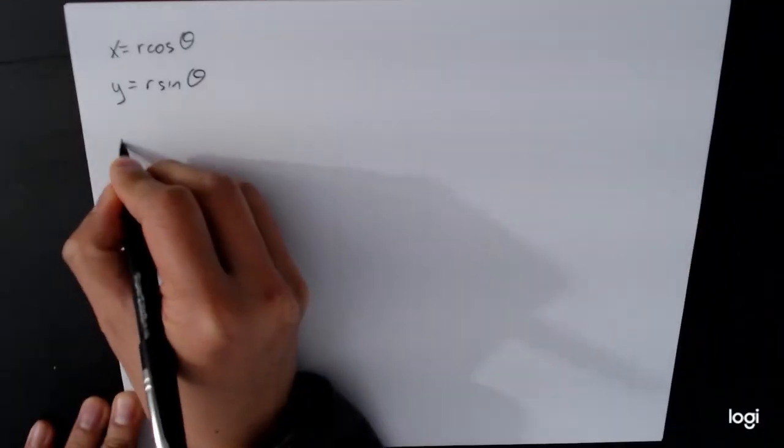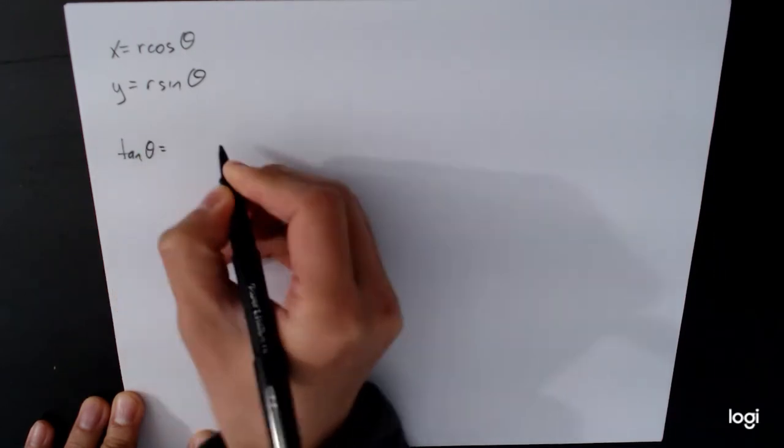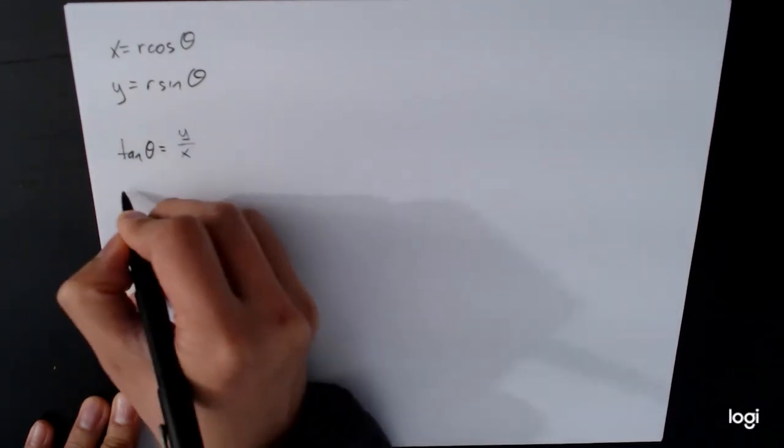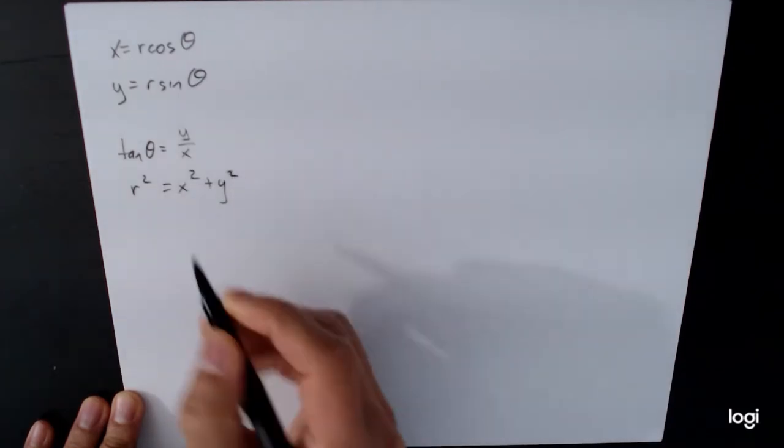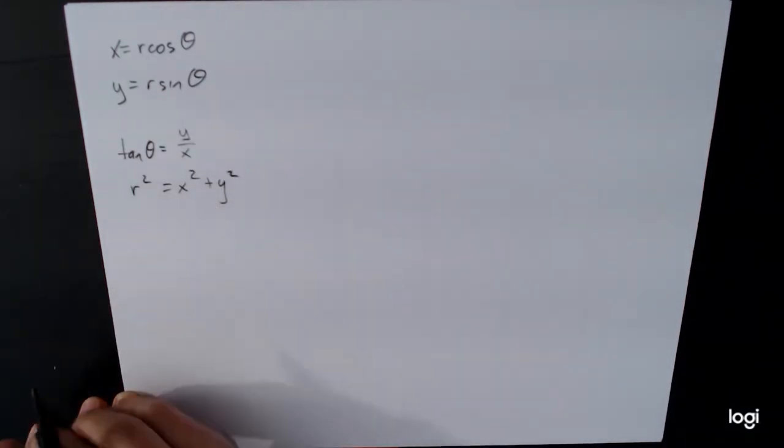we have tangent of theta is equal to y over x, and r squared is equal to x squared plus y squared. This is how we go from rectangular to polar.